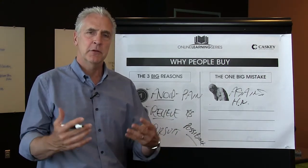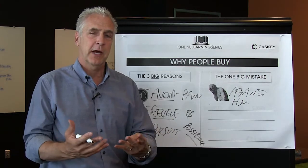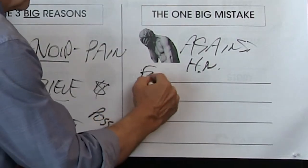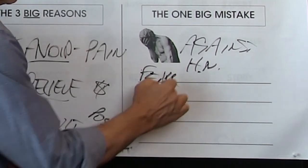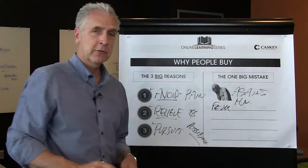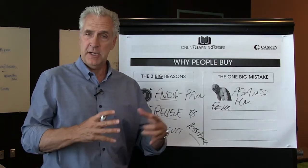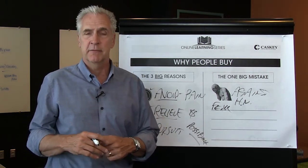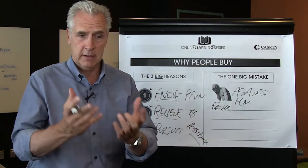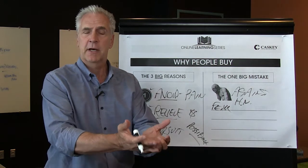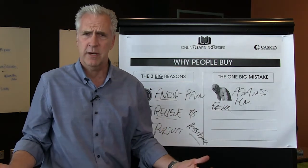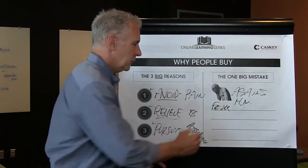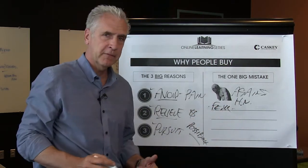You have to allow the human nature of the prospect to work for you, not against you. So what are some human nature elements? Number one: fear. Prospects are afraid. They might be afraid to take a chance, they might be afraid to change, they might be afraid of their manager if they come in and say, 'I'd like to buy this million and a half dollar solution,' and their manager says, 'Are you out of your gourd?' So they fear — you've got to help them get past the fear.